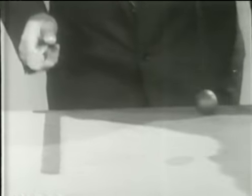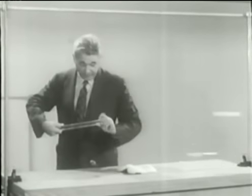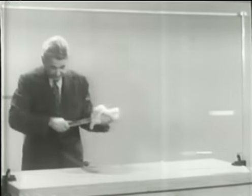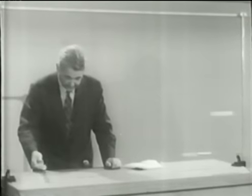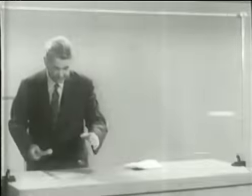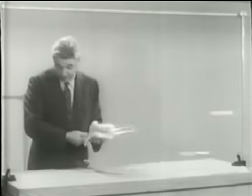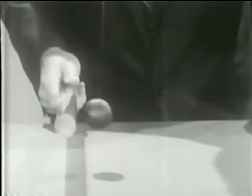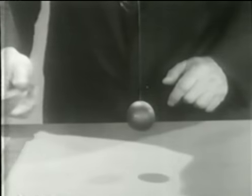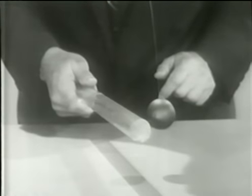La bacchetta elettrizzata attraeva la bottiglia proprio come ora attrae questa pallina da ping pong. Ho il modo di scaricarla, cosa che non si può fare con la gravità. La forza dipende dalla distanza: più la avvicino e più la attira. E se la bacchetta tocca la pallina, poi la respinge, mentre non vedrete mai la gravità a respingere.